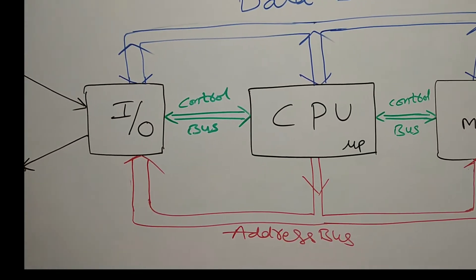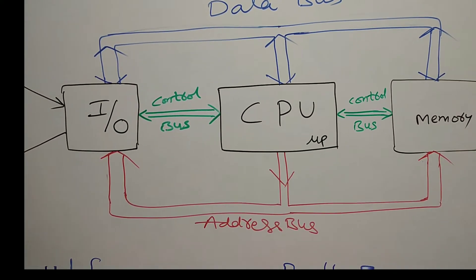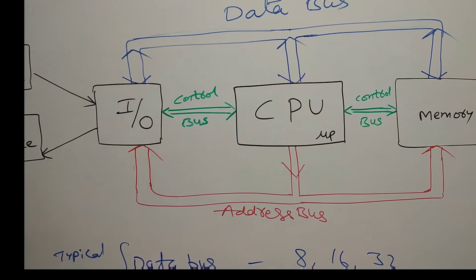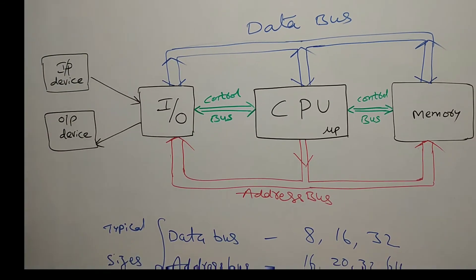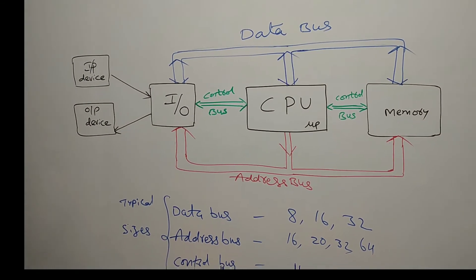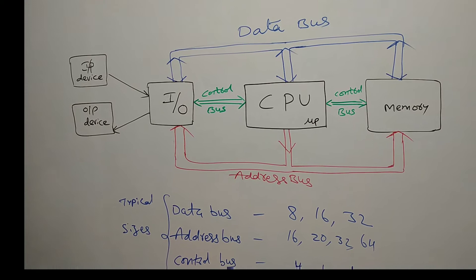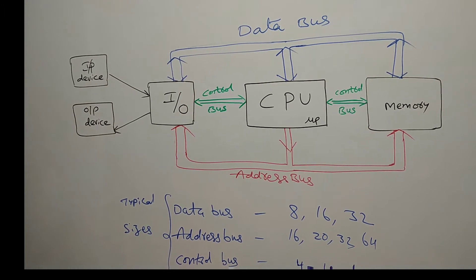The three buses are: address bus, control bus, and data bus. Their directions are clearly mentioned as unidirectional and bidirectional.